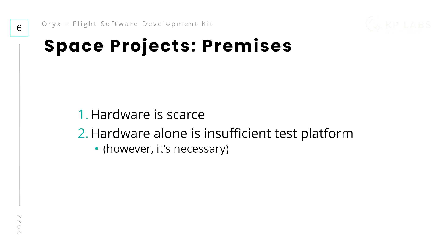The simplest example is testing fault detection: it's very hard to put hardware in a fault state because it's designed not to do that. There are ways to inject faults in hardware but that's expensive. So these are the two premises and the overall design goal: shorten the feedback cycles, be able to work when hardware is scarce, and treat hardware as an insufficient but necessary test platform.